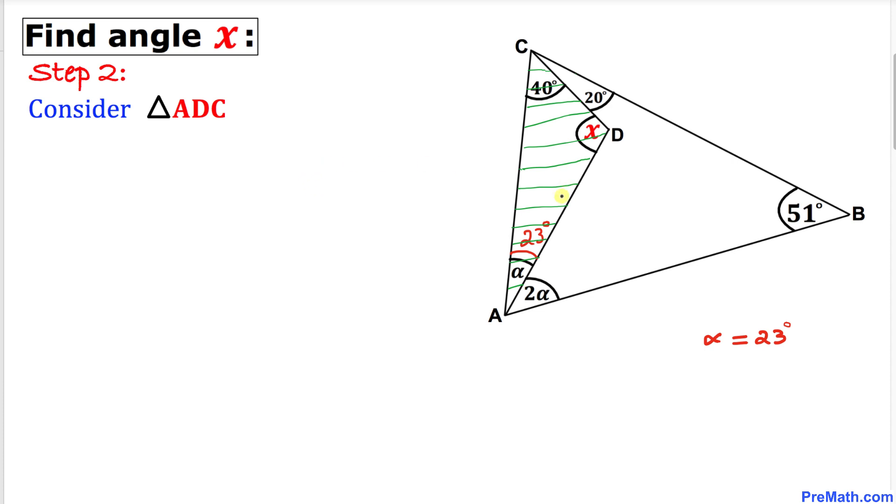Here's our next step. Let's focus on this smaller triangle ADC. We know that the angle sum in this triangle must be equal to 180 degrees. So let's add them up: angle X plus 23 degrees plus 40 degrees must equal 180 degrees.